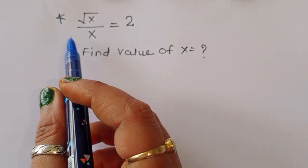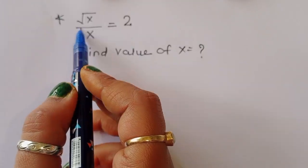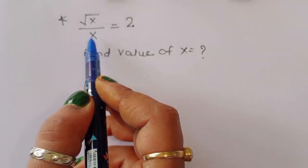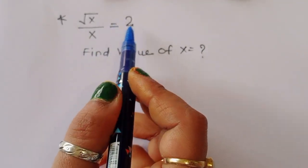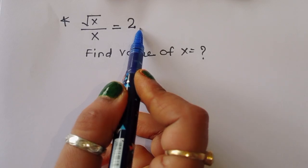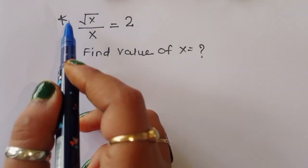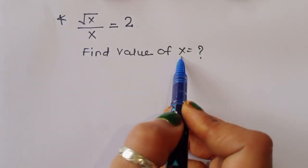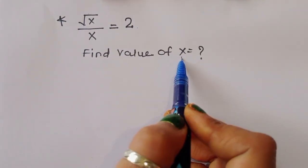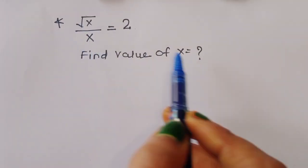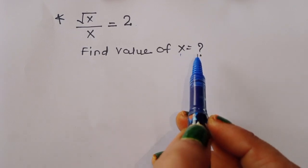The question is: square root of x divided by x is equal to 2. We have to find out the value of x. Let's see the solution.